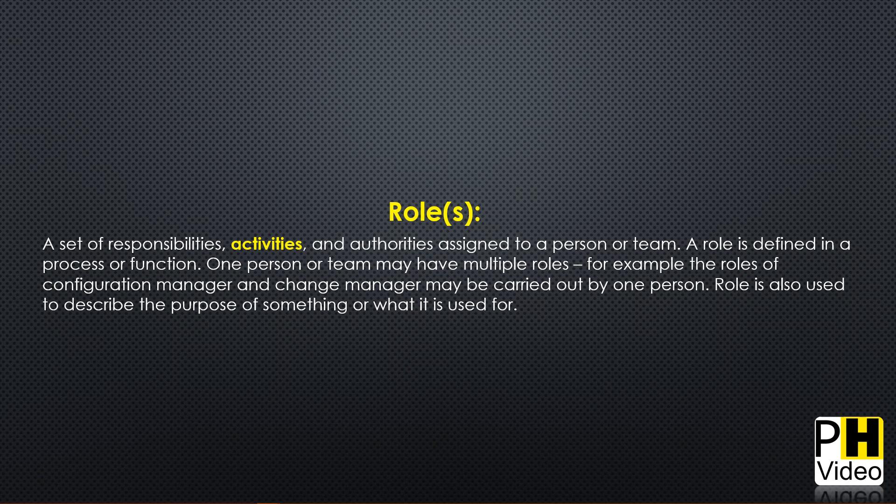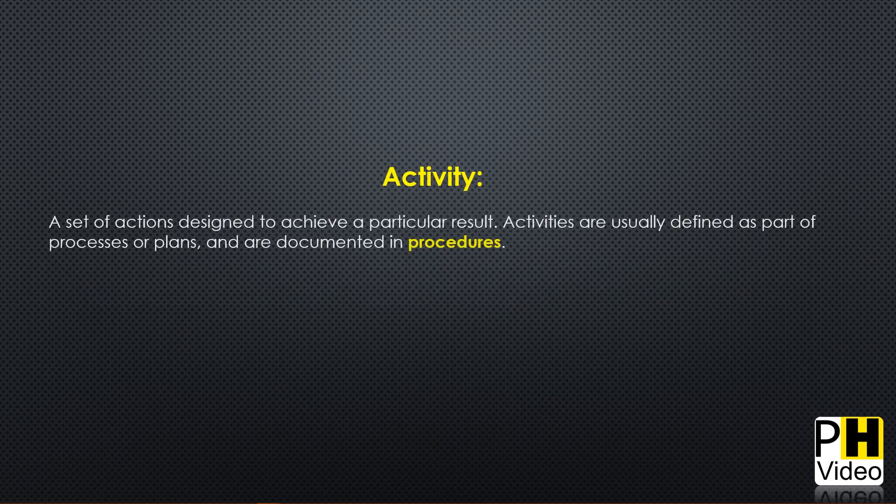Roles can be combined, though we want separation of duties where possible. An Activity is a set of actions designed to achieve a particular result, usually defined as part of a process or plan and documented in procedures. An activity is not a process — it's part of a process. A Procedure is a document containing steps specifying how to achieve an activity — a procedure is defined as part of a process, like work instructions for how to configure a server.